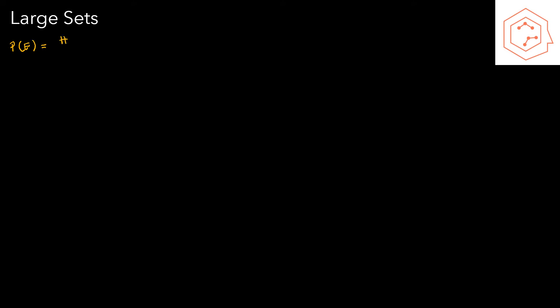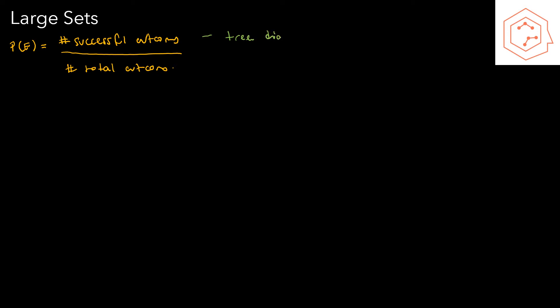As a reminder from the previous video, we're now able to find the probability of any event or outcome in an experiment by calculating the ratio between the number of successful outcomes — successful meaning our event criteria is satisfied — divided by the total number of outcomes in the experiment. We found these outcomes by using either tree diagrams, tables, or simply finding patterns to list all the possible outcomes.